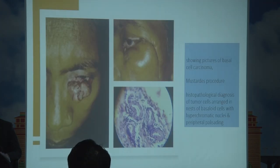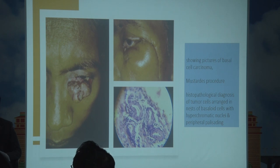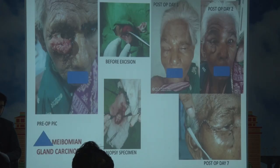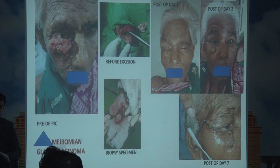This is a case of basal cell carcinoma showing a Mustardé flap done, with pre- and post-op pictures and the histopathological diagnosis. This is a case of sebaceous carcinoma showing a pre-op picture, during excision, and a post-op picture.